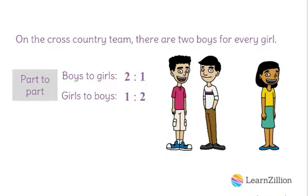We can also compare the number of boys to the total number of teammates. If we have two boys and one girl, that means we have a total of three teammates. In order to write this as a ratio of boys to total, we know that we have two boys out of three total, so the ratio is two to three.